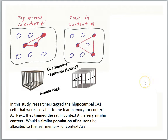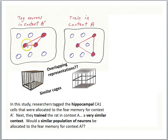Now let's look at a series of experiments using optogenetic techniques to help track down the engram for a memory. In this study, researchers tagged the hippocampus CA1 cells that were allocated to the fear memory for context A'. By tagging, we mean they're inserting those light-activated channels. Three cells out of this population are going to be the engram for the fear memory to context A'. The animal was put in a cage and shocked, creating an engram for that fear memory, and these cells are now controllable with light.